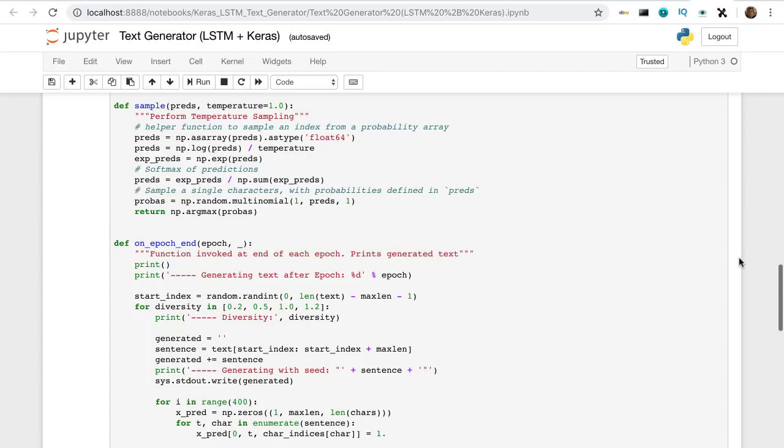I define a callback print callback and define a method on epoch end, which, as the name suggests, is executed after every epoch. An epoch is complete when all the sequences have been read once by the model.